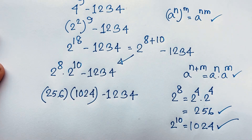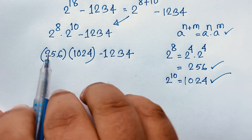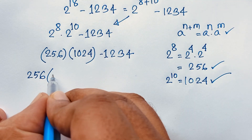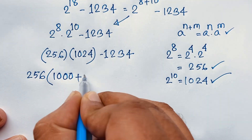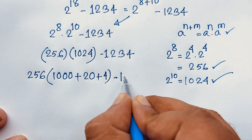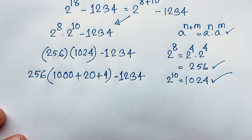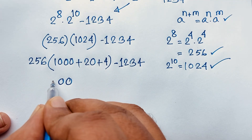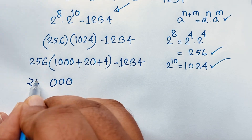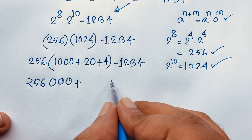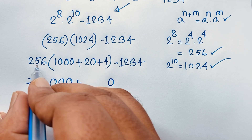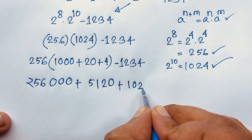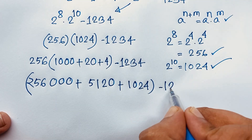I solved this question step by step. Now, how to simplify this? So it will be 256 times 1024, minus 1234. We expand 1024 as 1000 plus 20 plus 4. Then 1000 times 256 is 256000, plus 20 times 256 equals 512, plus 4 times 256 equals 1024, minus 1234.